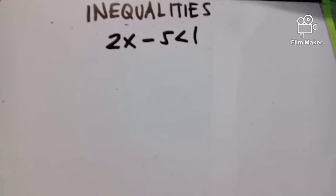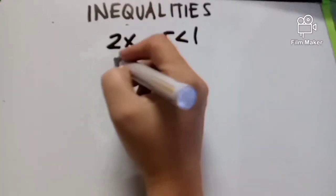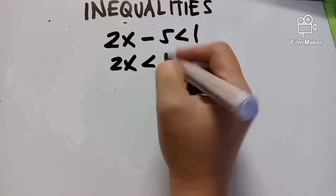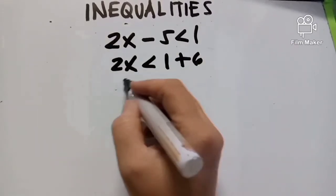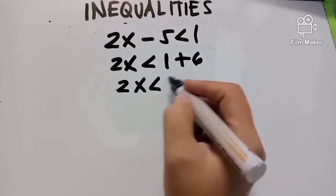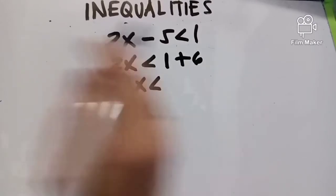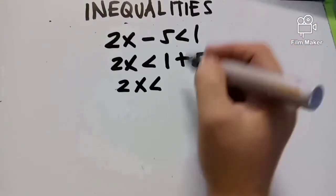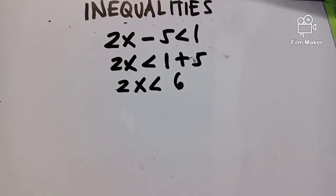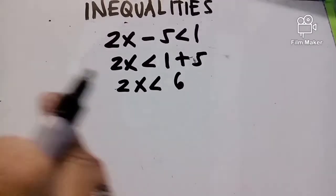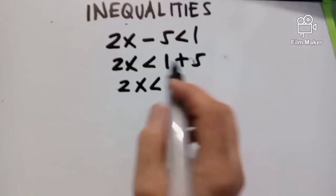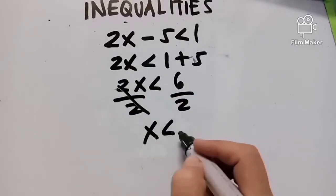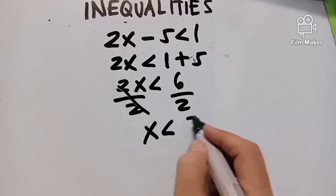So how do we solve this? It's a simple equation. We have 2X less than 1. Transposing negative 5 to the other side gives us positive 5, so 2X less than 1 plus 5, which is equal to 6. Then divide both sides by 2, giving us X less than 3.